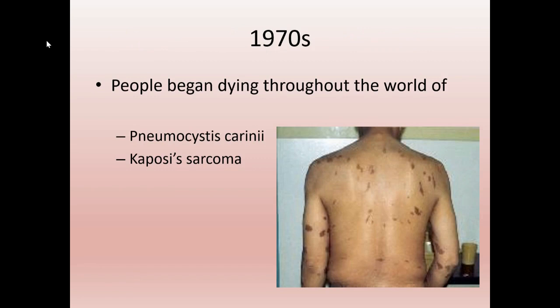In the 1970s, people began dying throughout the world. You don't die directly of HIV or AIDS — you die from your immune system shutting down and exposing you to opportunistic infections. Two common ones killing people, especially young people in the 1970s, were pneumocystis carinii and Kaposi's sarcoma. Pneumocystis carinii is a form of pneumonia — if you've had a bad cold, you've probably fought this off at some point just fine.